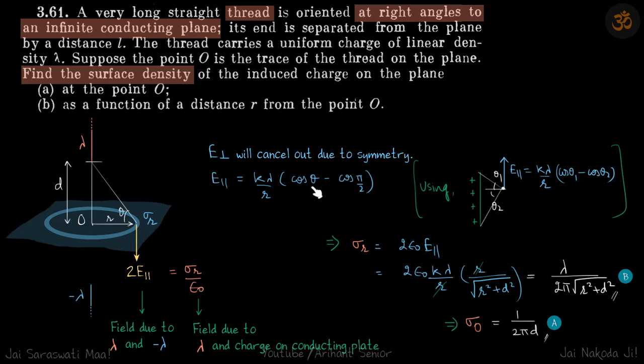We can just write it as cos theta minus cos of pi by 2. As we are going to infinity, this theta will increase and it will eventually become pi by 2.